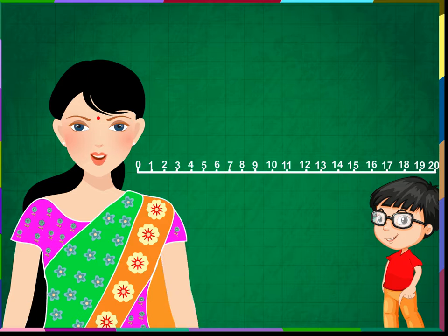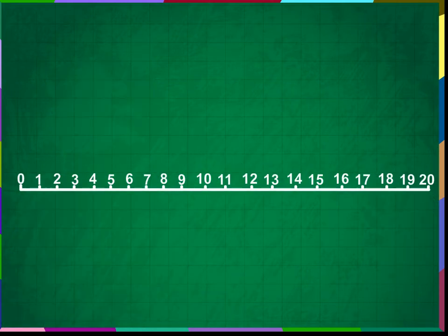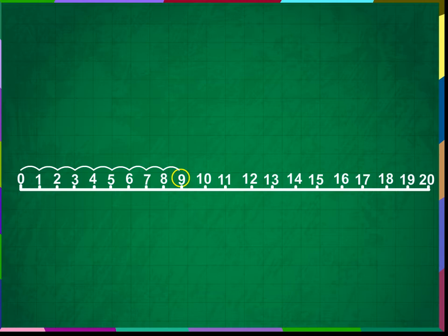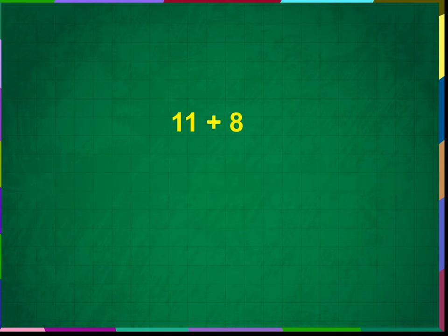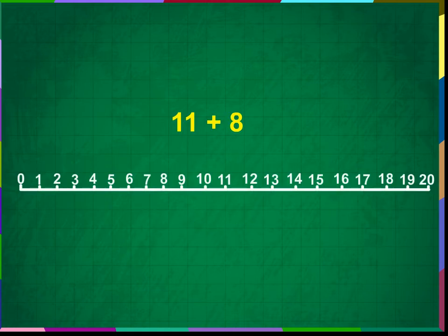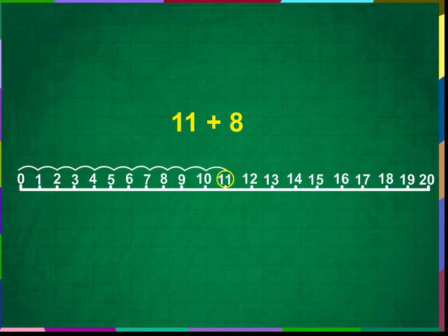Now let us add two numbers with the help of this number line. Add nine and eight on the number line. Let us start from zero and go up to nine in one long jump. From here, let us jump eight more numbers. We are at seventeen — the sum is seventeen. Add eleven plus eight: start from zero, go up to eleven, then count eight more numbers. We have reached nineteen. This is our answer.